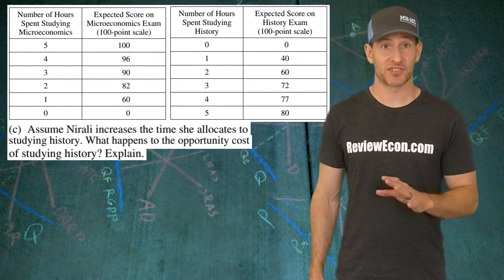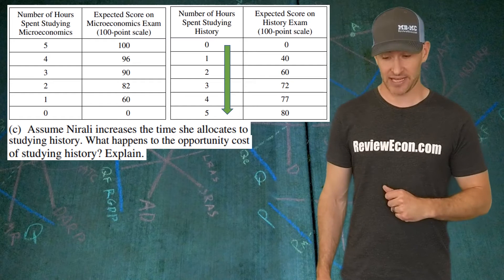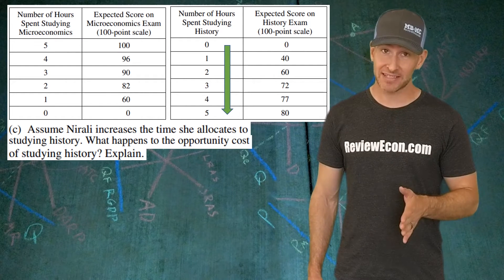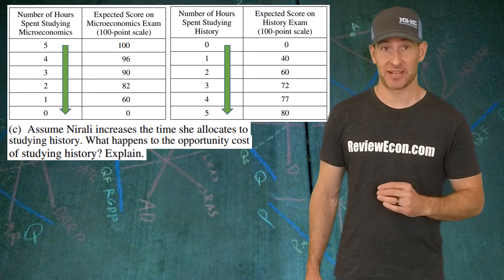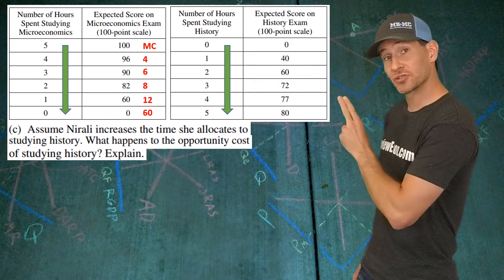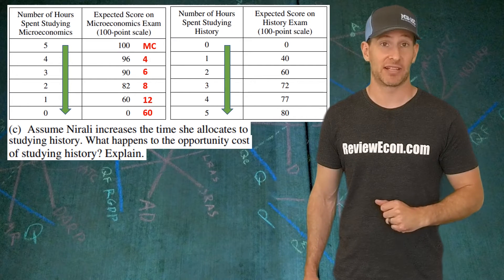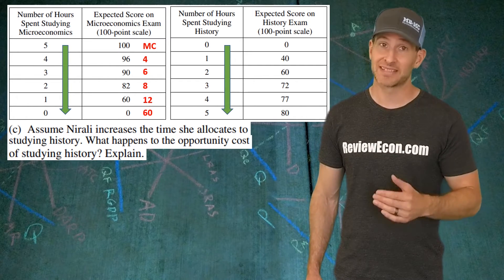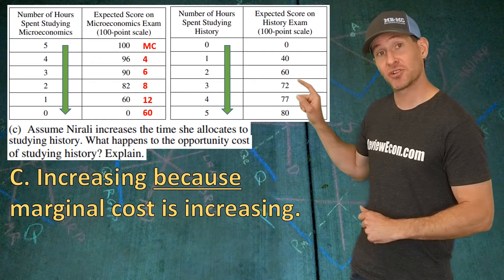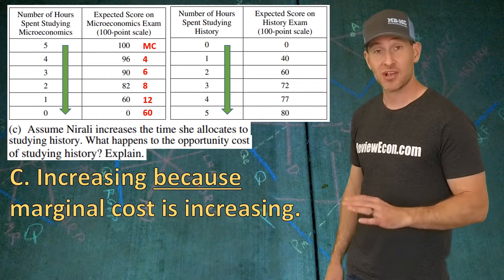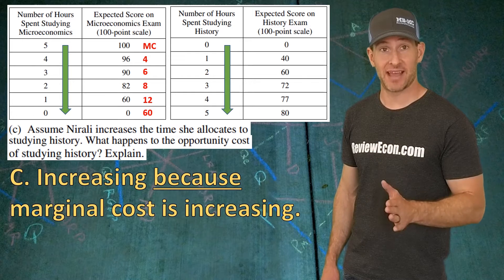For part C, we're looking at Nirali's opportunity cost for studying history longer and longer. With each additional hour of studying history, the score on her history exam continually increases, but the score on her economics exam continually decreases with each additional hour lost studying economics. As the marginal cost increases, that tells us the opportunity cost of studying history continually increases. All you have to do is say the opportunity cost increases and reference the marginal cost — each additional hour costs her a greater and greater amount of points, so because those marginal costs are increasing, the opportunity cost is increasing.